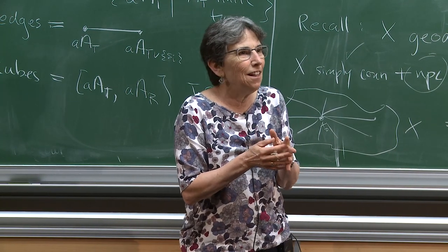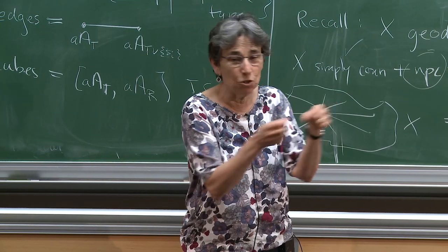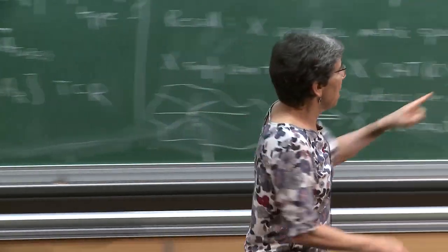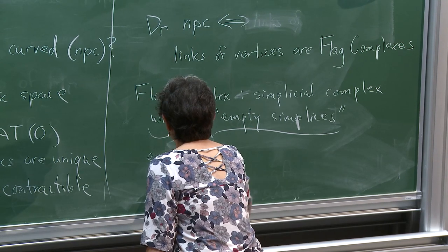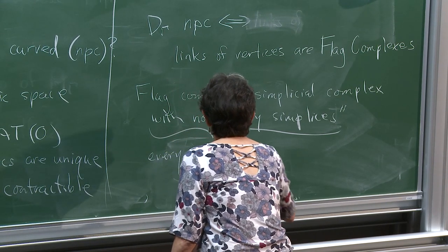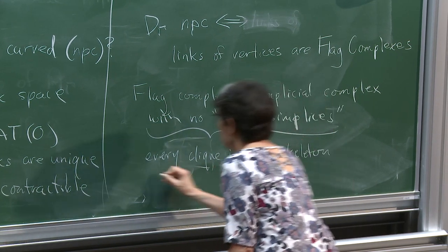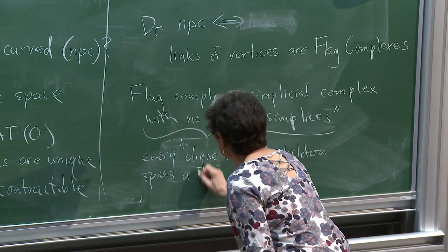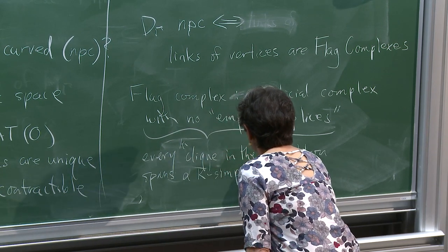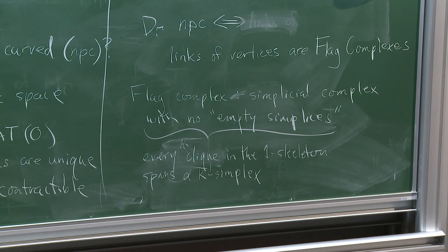Instead of saying 'one-skeleton of a simplex,' I use the word clique. A clique is a graph where every vertex is joined to every other vertex by an edge. So another way to say this: every clique in the one-skeleton spans a simplex. A clique with K vertices spans a K-simplex.